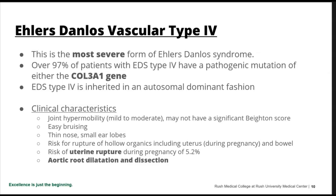As with Ehlers-Danlos type 1, this is a connective tissue disorder inherited in autosomal dominant fashion. Clinical characteristics include joint hypermobility — mild to moderate — and they may not even have a positive Beighton score. They usually have easy bruising, and may have clinical characteristics including a thin nose and small earlobes. There's a risk of rupture of hollow organs including the uterus and the bowel — uterine rupture occurs in 5.2% of pregnancies. They are also at risk of significant aortic root dilatation and dissection.